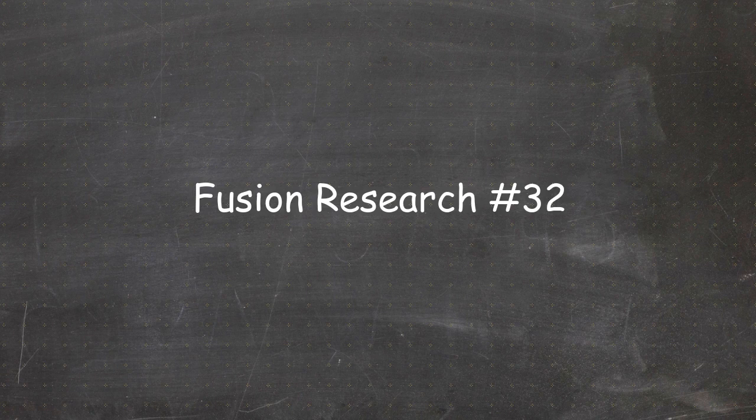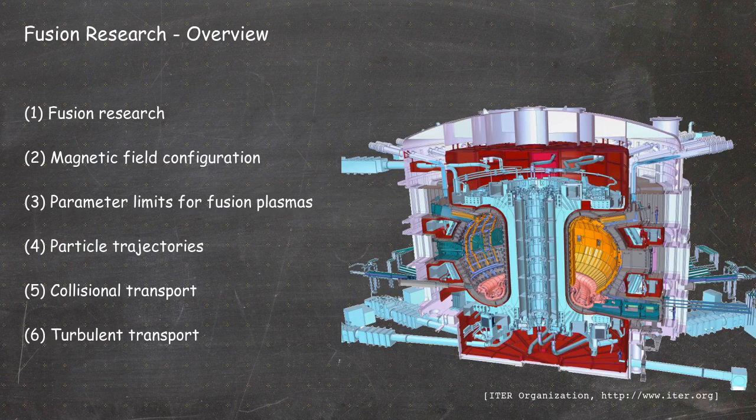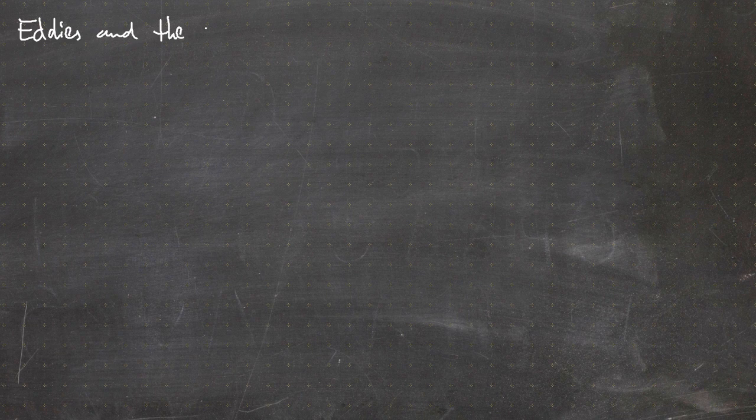Hello everybody and welcome to video number 32 of the online version of the fusion research lecture. We are in chapter 6 on turbulent transport. In the last video we talked about turbulent transport in neutral fluids, showed some examples, and introduced the Navier-Stokes equation and the Burgers equation being similar to the 1D Navier-Stokes equation without a pressure gradient term. In this video we will have a look at the energy transfer between different size scales — an overview over eddies and the energy cascade, eddies being flow vortices.